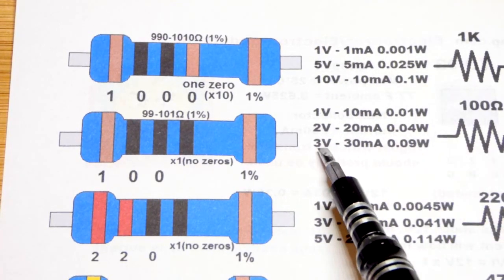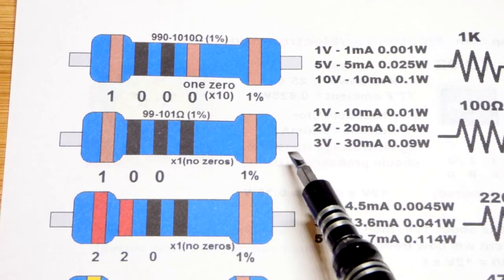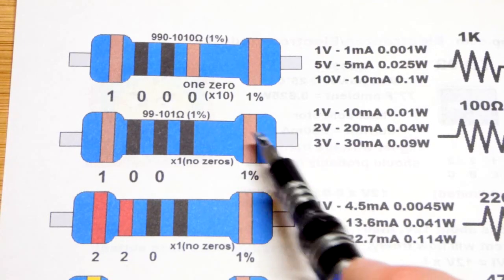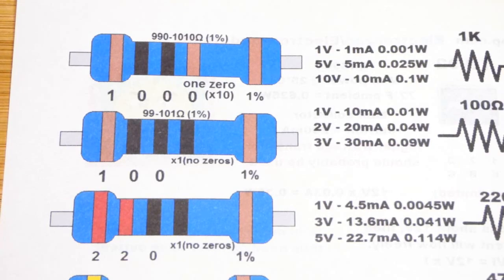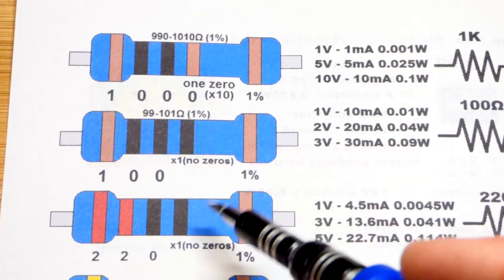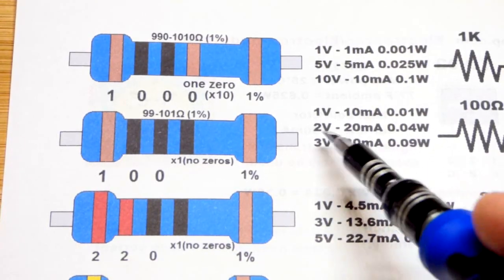The problem here though is if you have a 5 volt supply, an LED that drops 2 volts, you'll have 3 volts across the resistor. You're going to be about 30 milliamps of current which is too much for the LED. And so that's why I use a slightly higher value resistor.